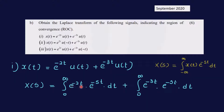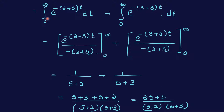Applying this to x(t) = e^(-2t)u(t) + e^(-3t)u(t), we take the Laplace transform of each term: e^(-2t)u(t) and e^(-3t)u(t), integrating each from 0 to infinity.